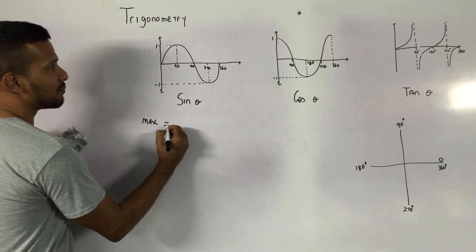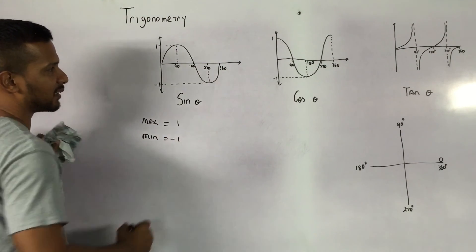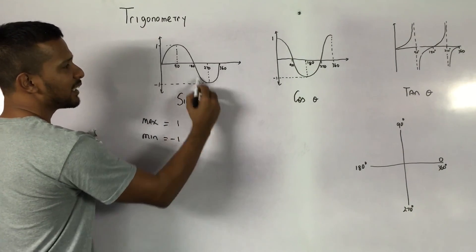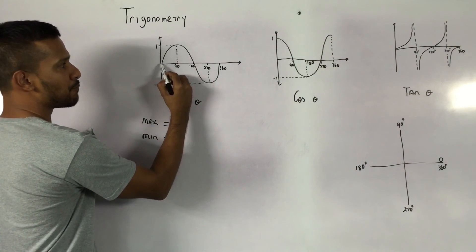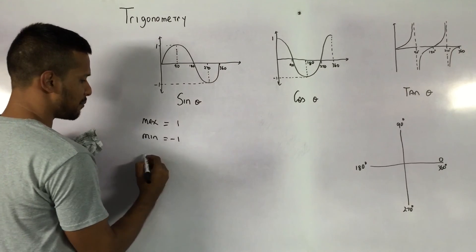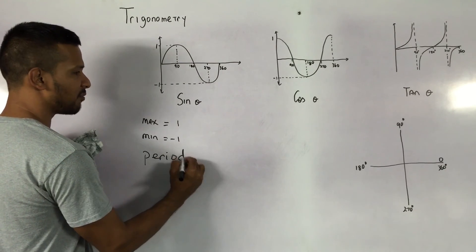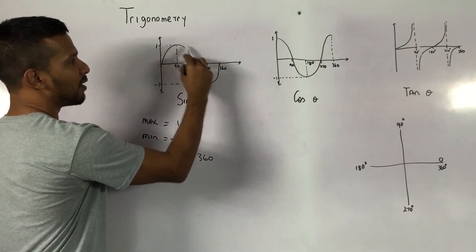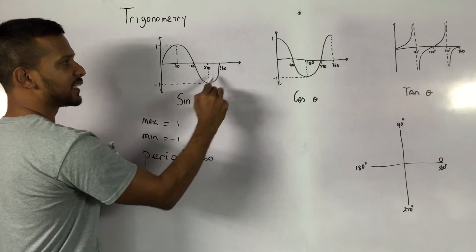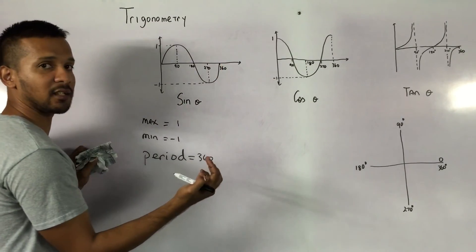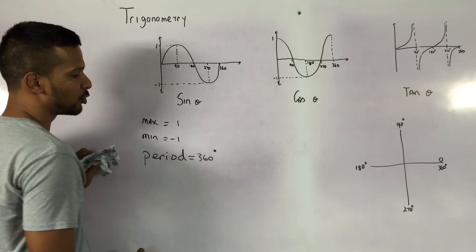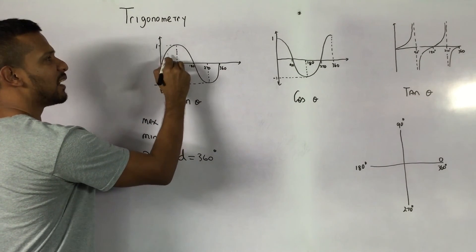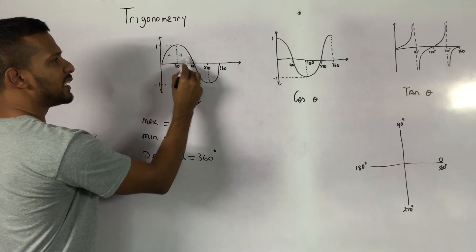Sine theta has a maximum value of one and a minimum value of minus one. If you look at the sine graph, when it reaches the end it starts back again, so the function repeats. The period of this function is 360 degrees — every cycle repeats every 360 degrees. It's important to note that all sine values are positive between 0 and 180, and everything is positive in that range.